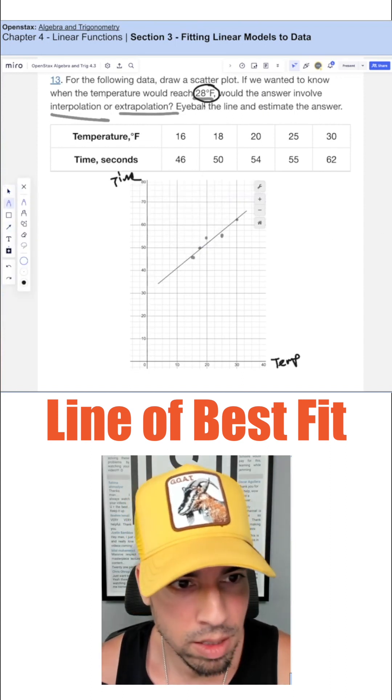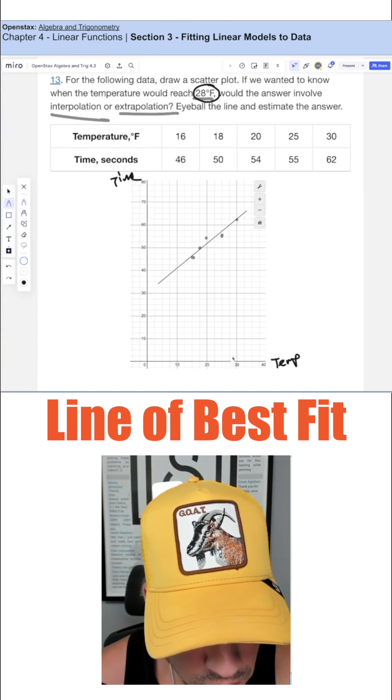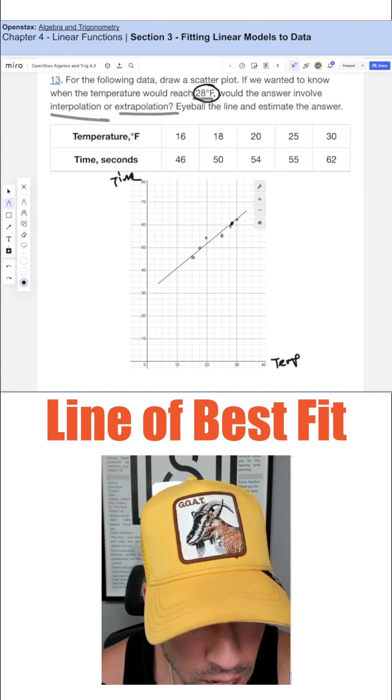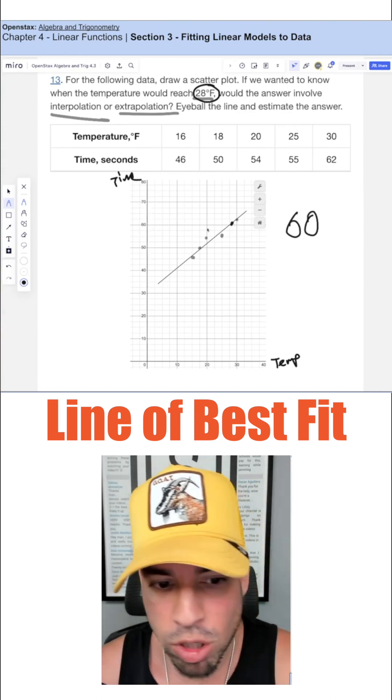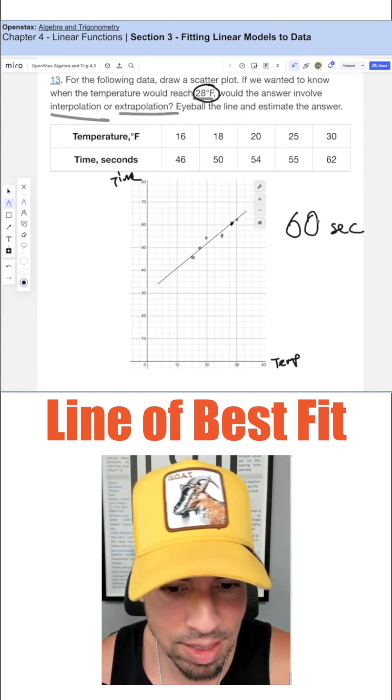So when we're talking about estimating the time for 28 degrees Fahrenheit, we want to look here and say, here's temperature, 28 degrees Fahrenheit, we're going to bring it up, and that hits about here on the line of best fit. And that's pretty darn close to 60. And again, we're talking about the y-axis time. So that would be an approximate 60 seconds.